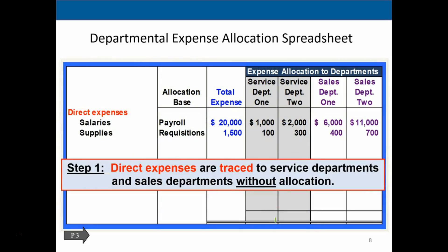Looking at the department expense allocation spreadsheet — step one — direct expenses are traced to the service departments and sales departments without allocation. In this example the direct expenses include payroll and requisitions. These are straightforward to assign directly to service department one, service department two, sales department one, and sales department two without needing any allocation method.